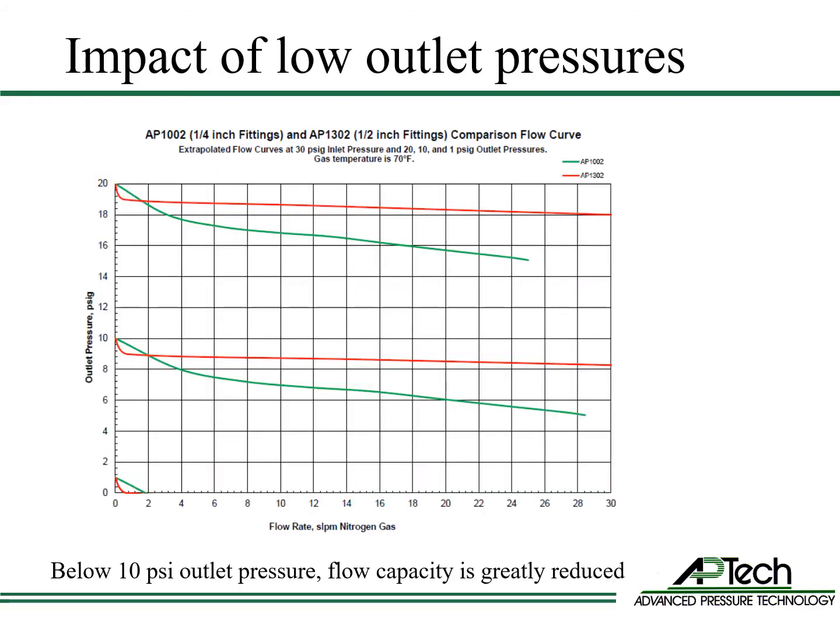This graph shows the impact of low outlet pressures on the AP1000 and 1300 series regulators. You can see that the slope of the droop with 20 psi and 10 psi outlet pressures are similar. Shifting the outlet pressure up or down does not alter the flow curve slope. However, below 10 psi, the slope is much steeper and flow capacity is greatly reduced. The APTEC 208 guide — our guide of recommended valves and regulators for specific specialty gases and flows — is available online at APTEC's website.